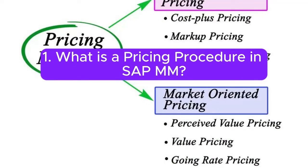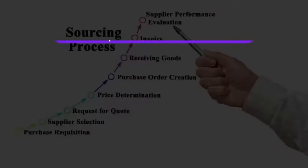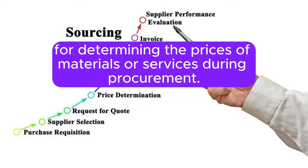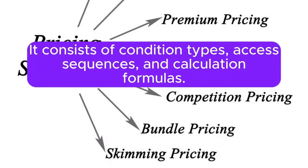Question 1: What is a pricing procedure in SAP MM? Answer: A pricing procedure in SAP MM defines the sequence and conditions for determining the prices of materials or services during procurement. It consists of condition types, access sequences, and calculation formulas.